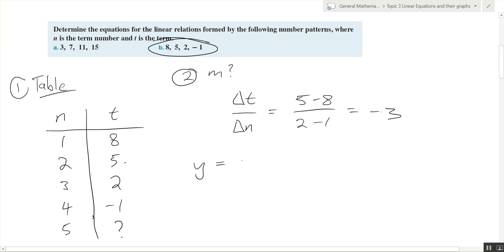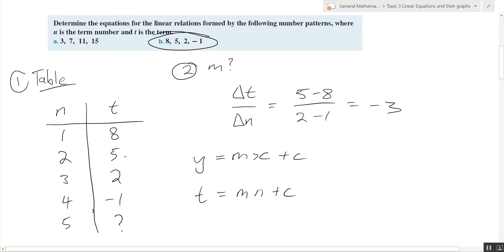You're used to a linear equation written like this, but now we've got it in terms of T and N. So the term is equal to M times N plus C. We need to figure out what the C is next. So this is step three.